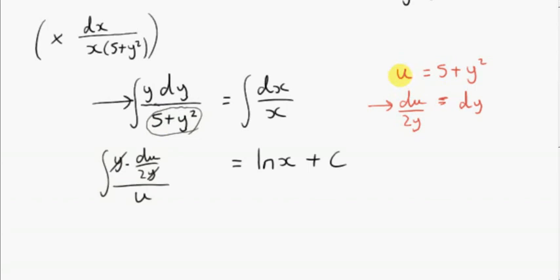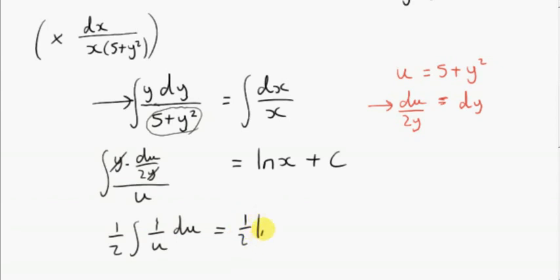So all we did was let u equal everything underneath to get the denominator into a single term — that usually simplifies things considerably. We got du/dy equals 2y, or du over 2y equals dy, so we replace dy with du over 2y. We have a half du on top, so the half can come out. We have a half integral of 1 over u with respect to u. The integral of 1 over u is ln of u, so we get a half ln of u equals ln of x plus c.